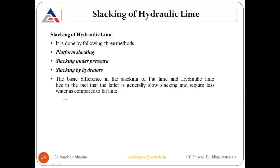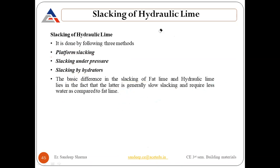The slaking of hydraulic lime is done by three methods: platform slaking, slaking under pressure, and slaking by hydrators. The basic difference in the slaking of fat lime and hydraulic lime is that hydraulic lime is generally slow slaking and requires less water compared to fat lime, which requires more water.